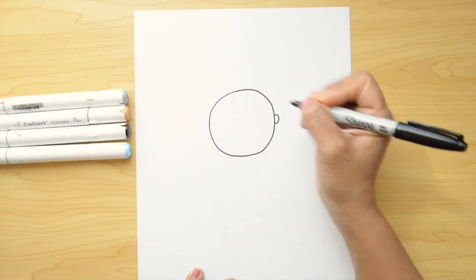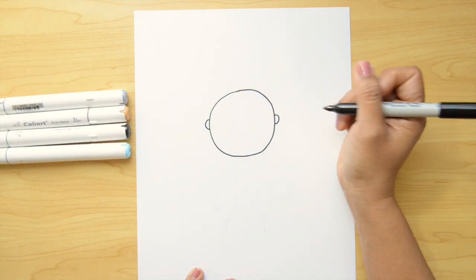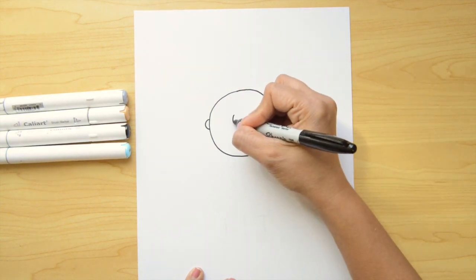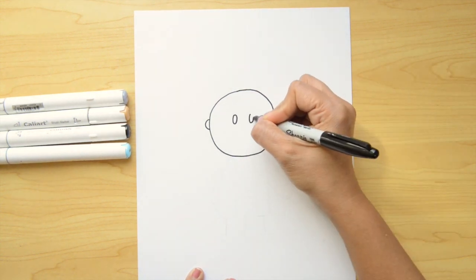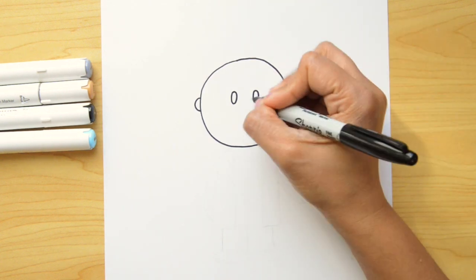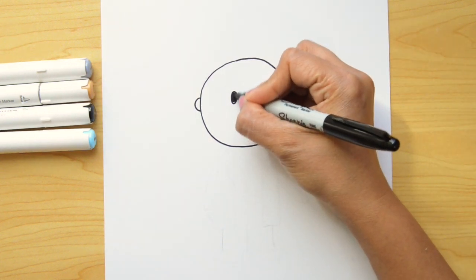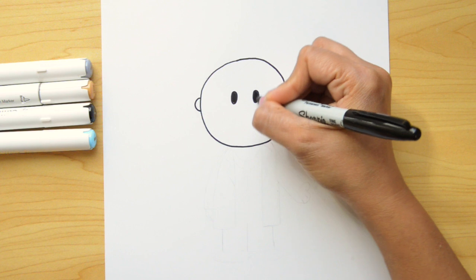Then we're gonna continue with the ears, two C shapes on the side of his head and the eyes in the middle are two oval shapes and we're gonna color this with black.